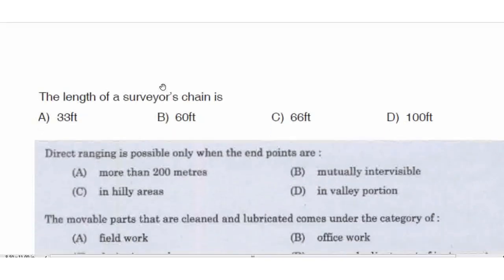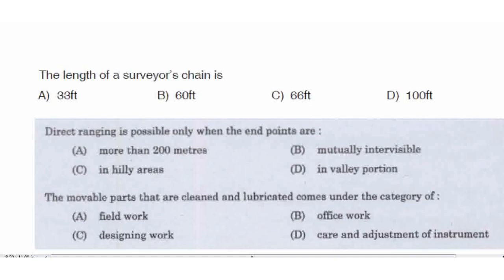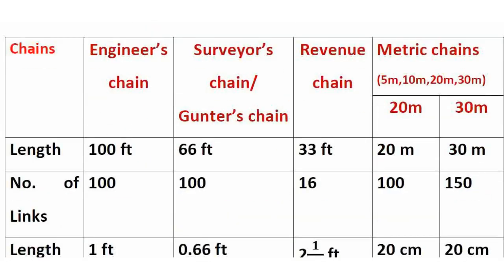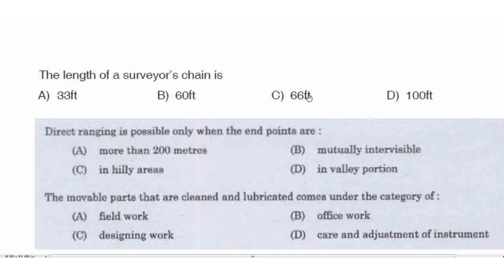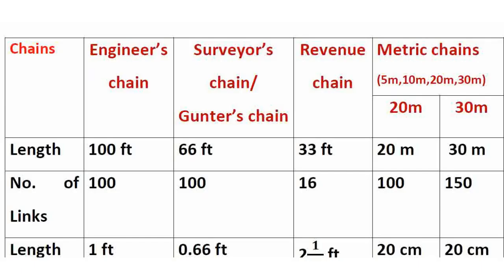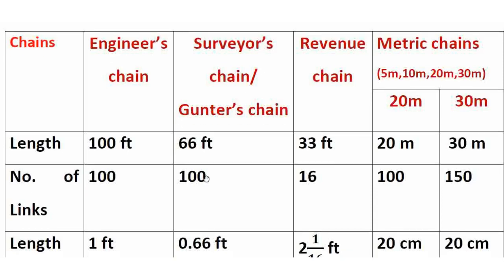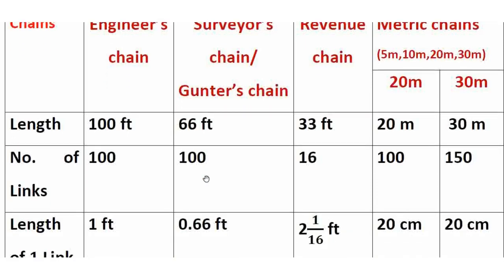Next question: the length of the surveyor's chain is 66 feet — right answer Option C. Engineer's chain is 100 feet, Revenue chain is 33 feet, Metric chain is 20 or 30 meters. The surveyor's chain has 100 links, each link being 0.66 feet.